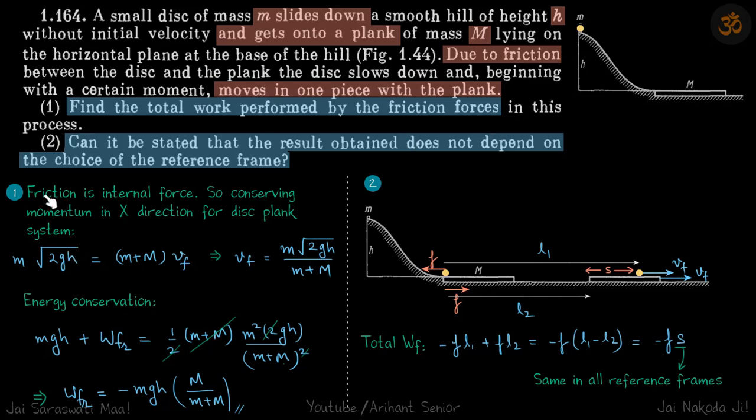So let's read also, friction is an internal force so conserving momentum in x-direction for disk-plank system. So initial momentum is m into root 2gh, so when it comes down to a height h its velocity will be root 2gh in x-direction. So m into root 2gh initial momentum is equal to final momentum (m + M) into Vf. So from here we get the final velocity of the system to be this much.